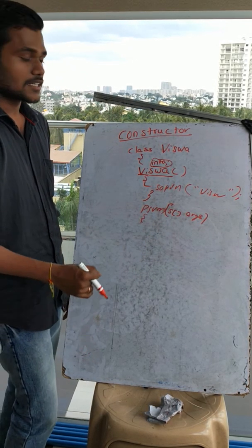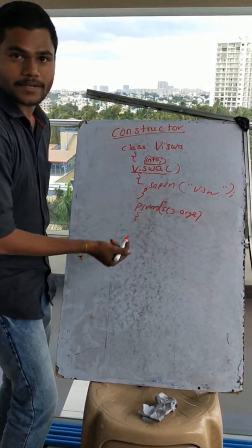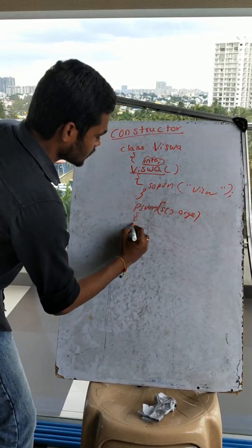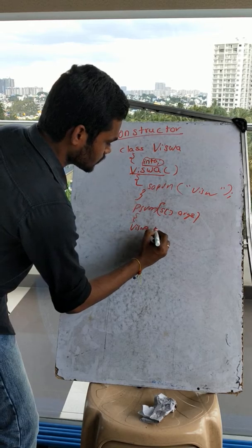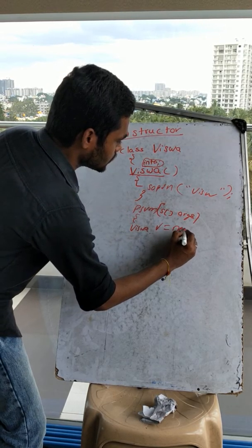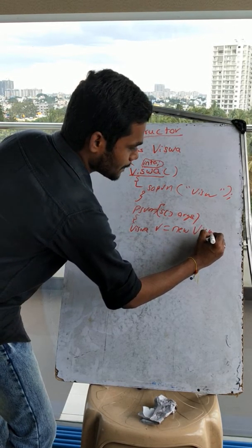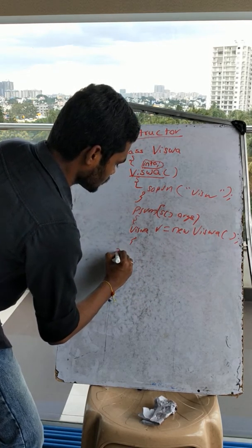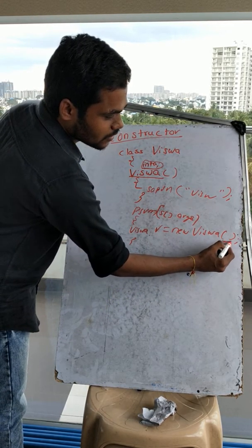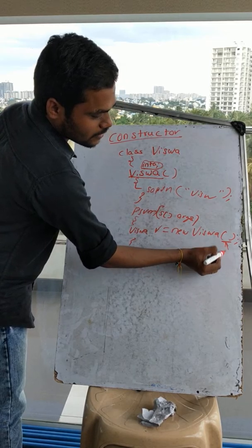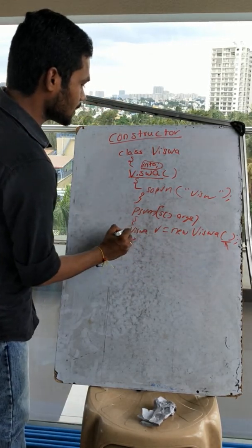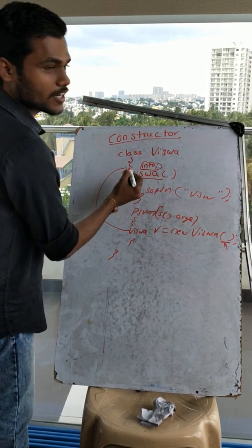We need to create an object for calling this constructor. Here, there is no passing of variable, so we will call the zero argument constructor.